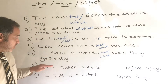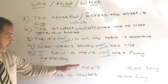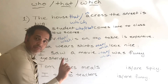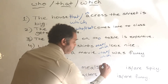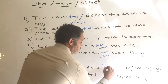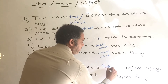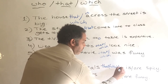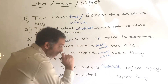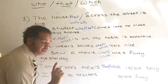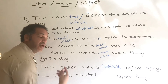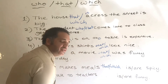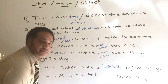Now: 'Tom makes meals.' Meal is not a person, so we can say 'that.' We can also say 'which.' Now the next question: do I say 'is' or do I say 'are'?